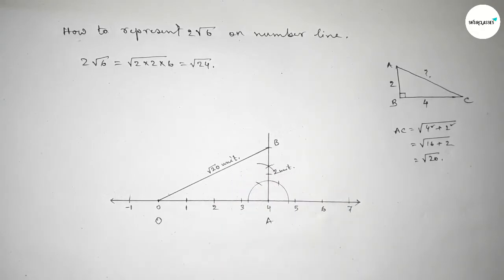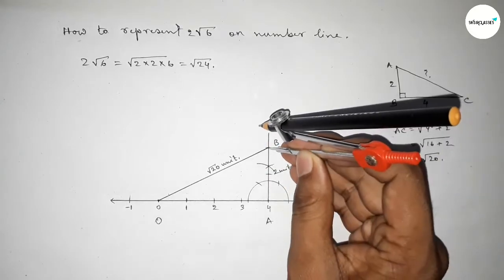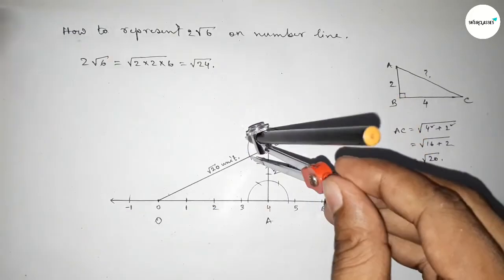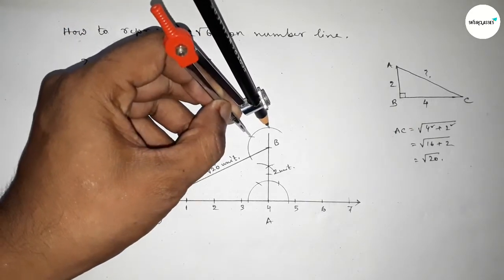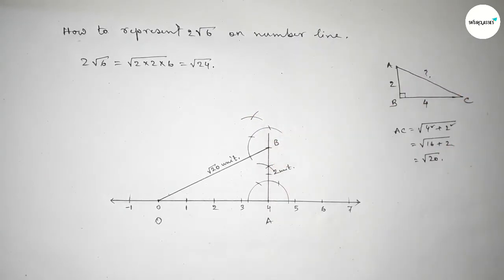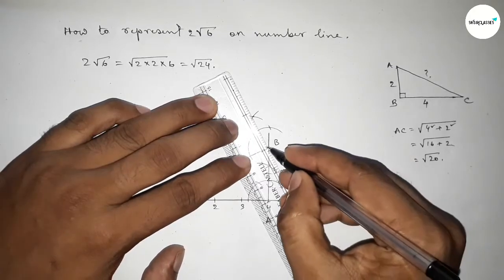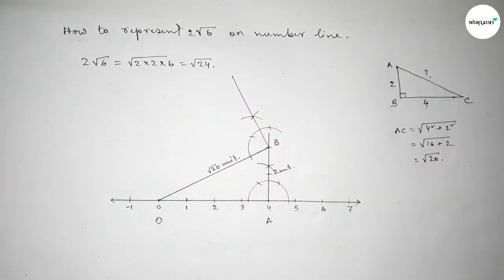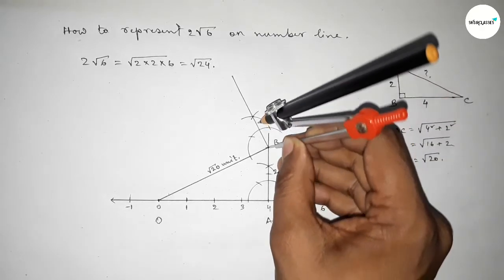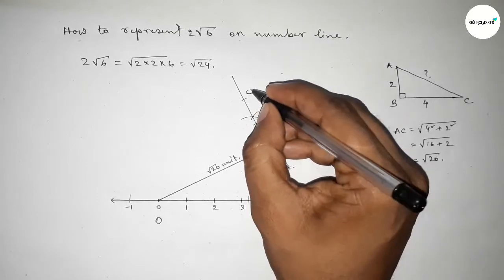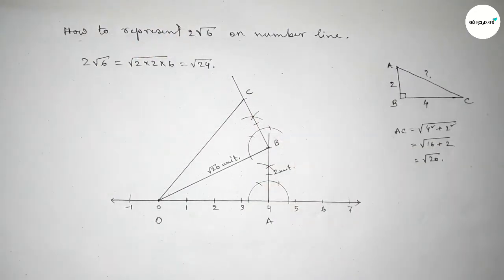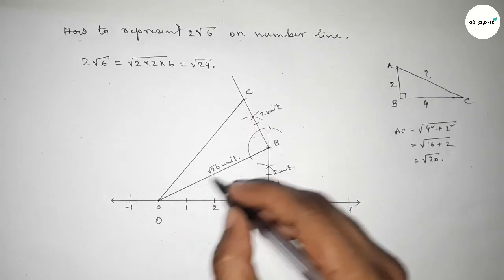Next, draw a 90-degree angle at point B again. Place the compass, take any length, draw an arc, then cut successive arcs at the same length. Both curves intersect at a point. Join the line to get a 90-degree angle at B. Take the length between any two numbers and cut here two times, giving point C, two units.